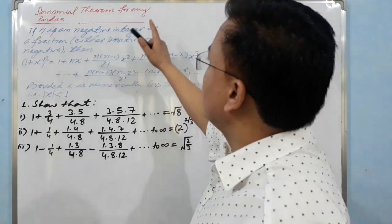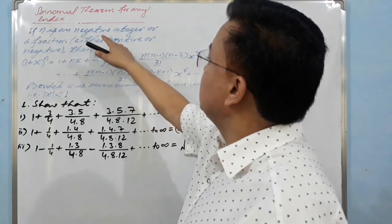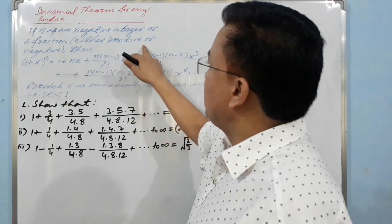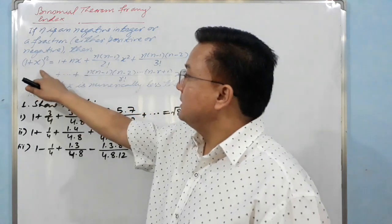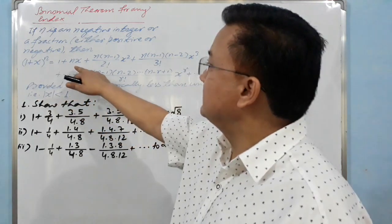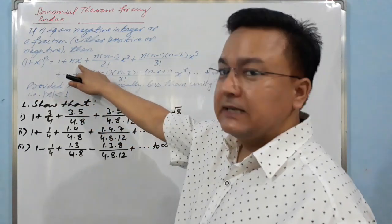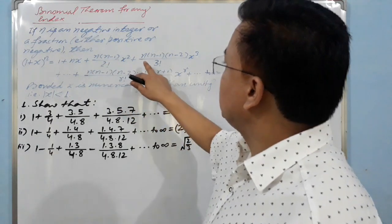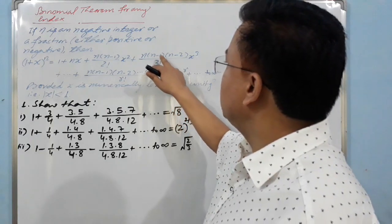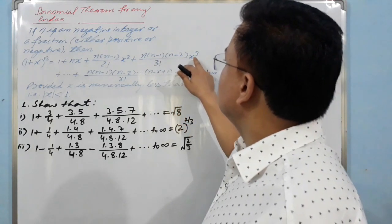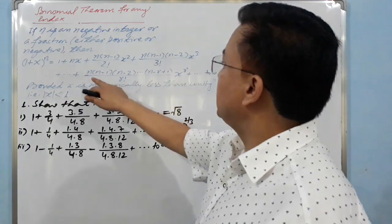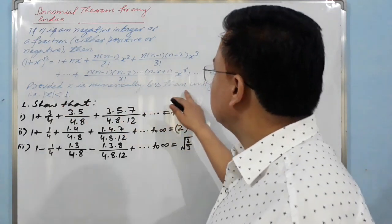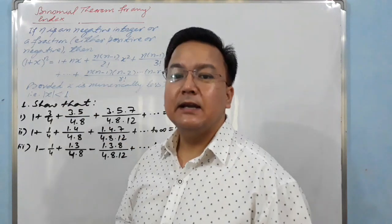So what is the Binomial Theorem for any index? If n is a negative integer or a fraction, either positive or negative, then (1 + x)^n = 1 + nx + n(n−1)/2! · x² + n(n−1)(n−2)/3! · x³ + ... to infinity.